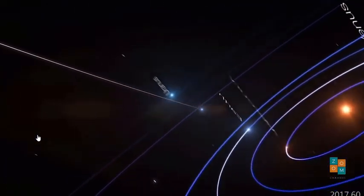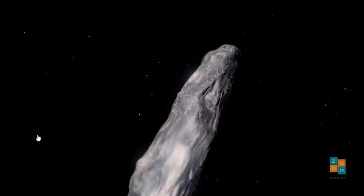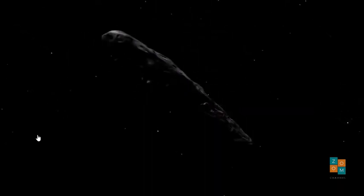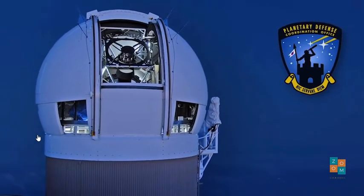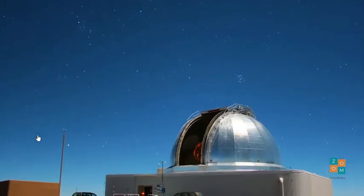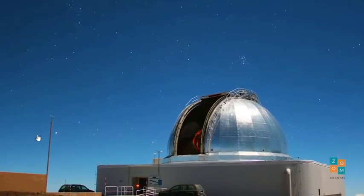JPL officials noted that the asteroid can undergo slight changes in its path over the centuries that could potentially put it on a collision course with Earth. That possibility is at least 200 years away, according to JPL.